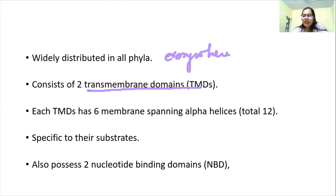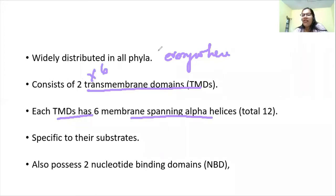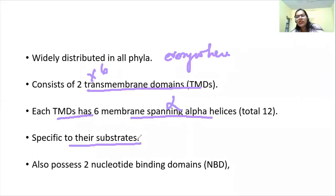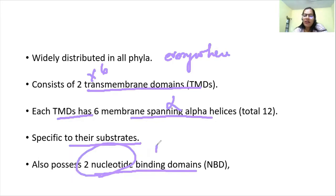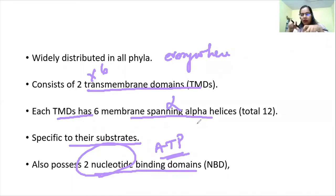ABC transporters consist of two transmembrane domains, and each transmembrane domain has six membrane-spanning alpha helices, giving a total of 12 alpha helices. They are specific to their substrates. They also possess two nucleotide binding domains — and in this case the nucleotide is ATP.